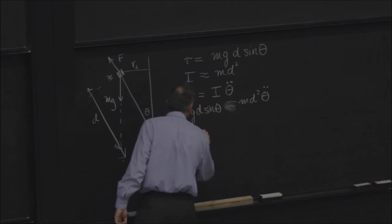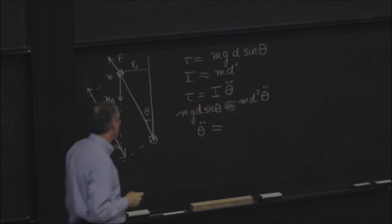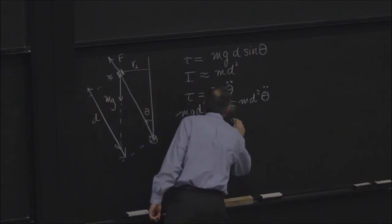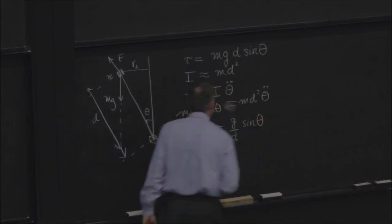So mg d sine theta is about equal to m d squared theta double dot. OK, solving for the angular acceleration. So the m's go out, one d goes out. And we get g over d sine of the angle.